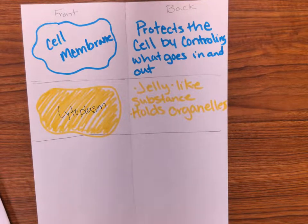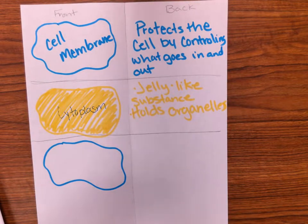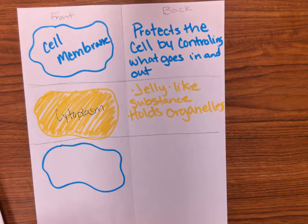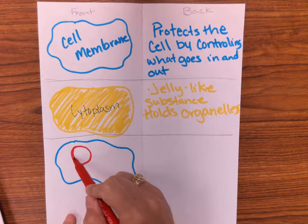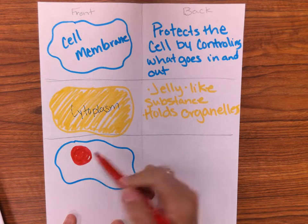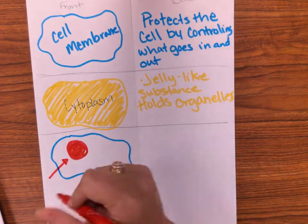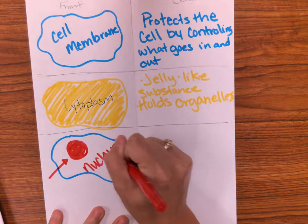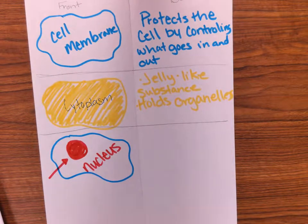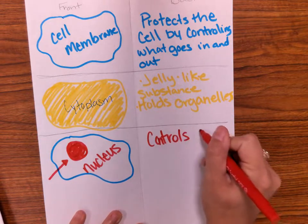The next organelle is probably one of the most important ones because it comes up a lot. I'll draw the membrane again and then draw a big circle inside the cell — this is the nucleus. We are eukaryotes, so we do have a nucleus. The nucleus is a membrane around our DNA and its job is to control cellular activities.